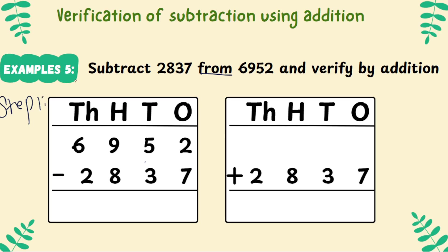Step 1: second number in the first line, first number in the second line. Now subtract. Here we have 2 and 7 — whether 2 can be subtracted from 7? No, the above number is smaller. So, get 1 from the neighbor; this will become 12, and this will become 4. 12 minus 7 is 5, 4 minus 3 is 1, 9 minus 8 is 1, 6 minus 2 is 4.